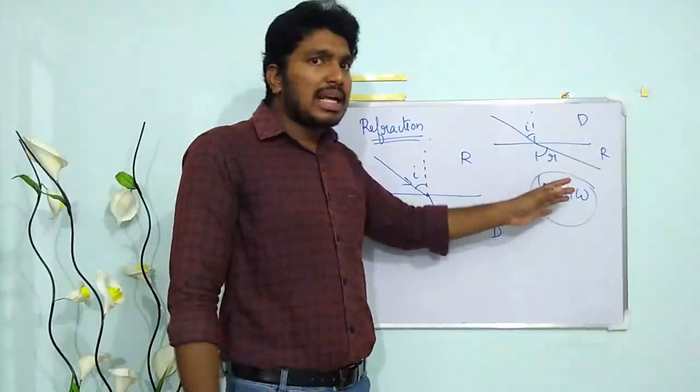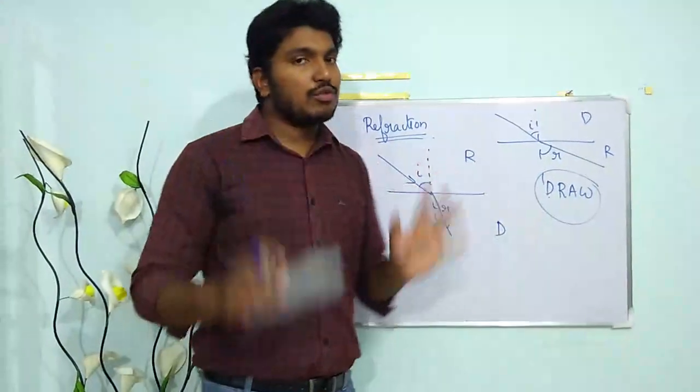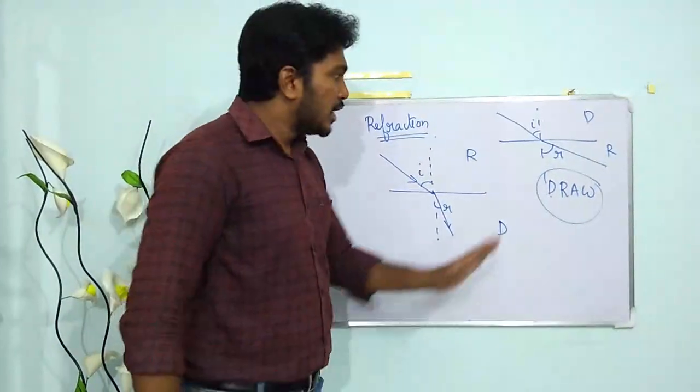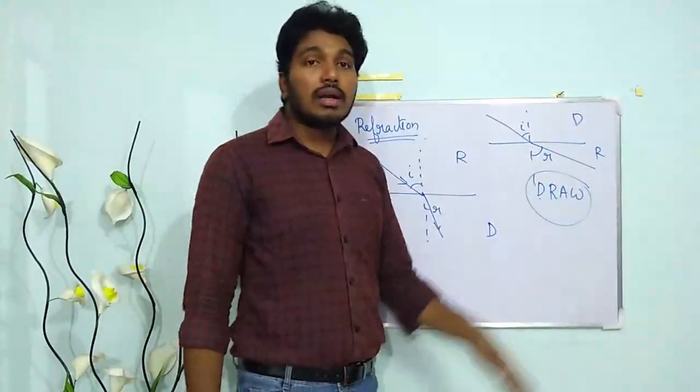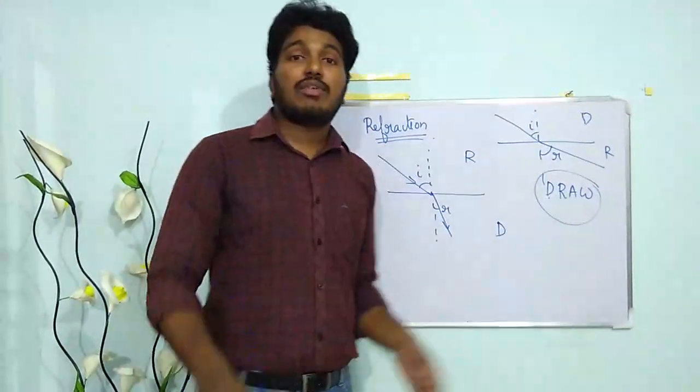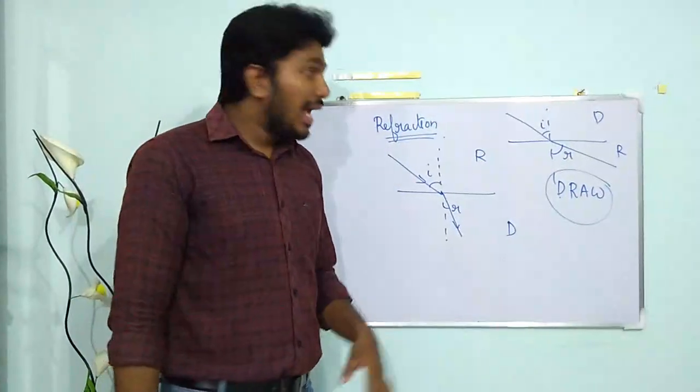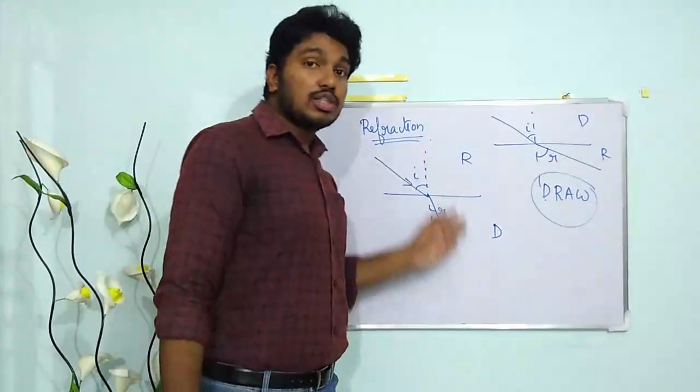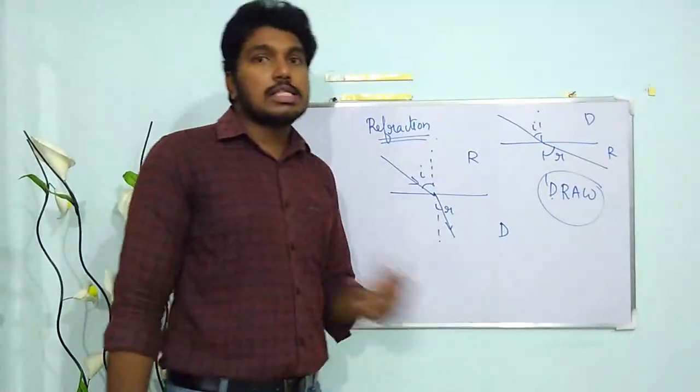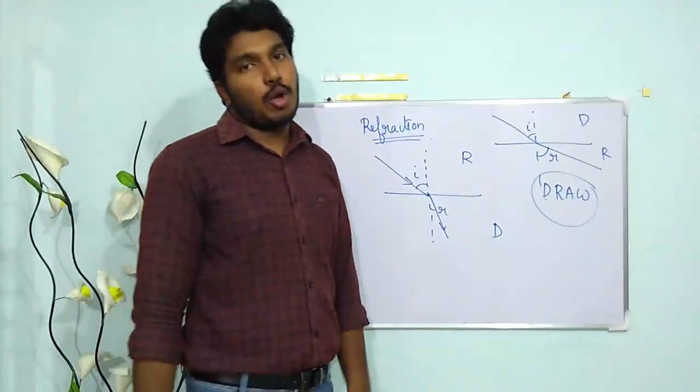You can just remember DRAW and it will be useful. So denser to rarer it bends away from the normal, and rarer to denser it bends towards the normal.